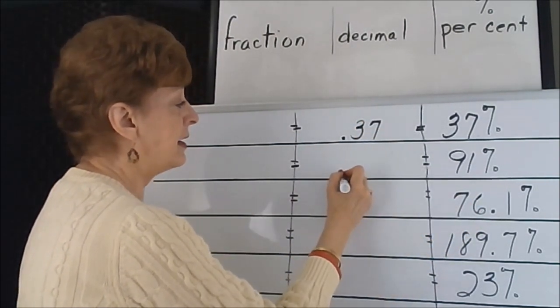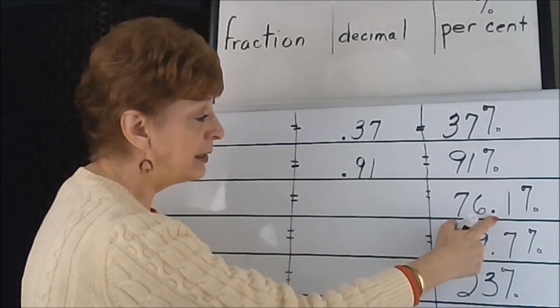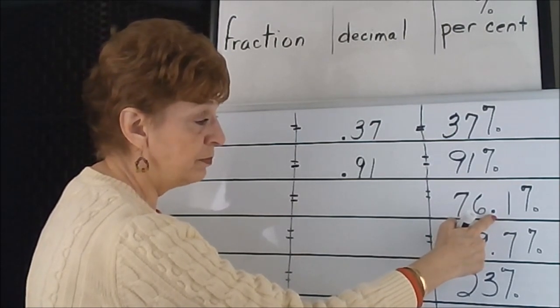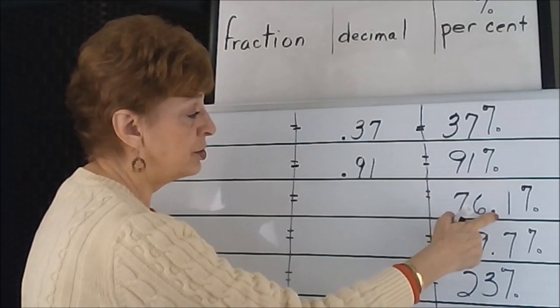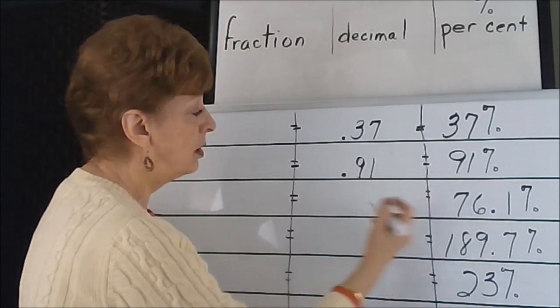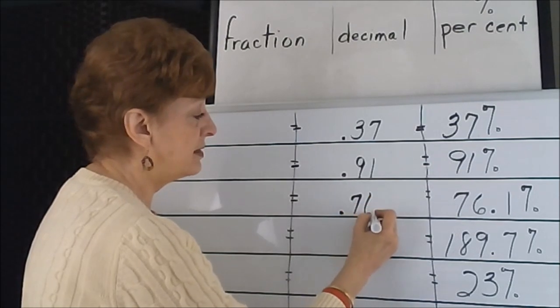0.91. This one has a decimal place in it, so we're going to start moving it from this place two columns over. So this would be decimal point 7, 6, and 1: 0.761.